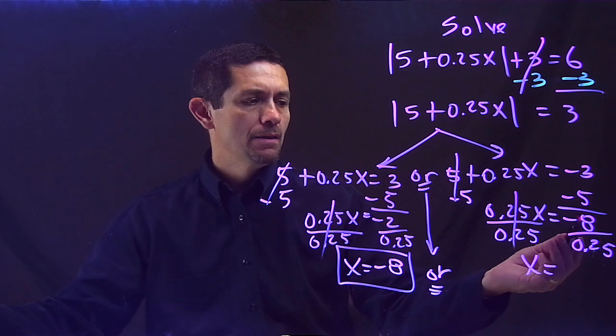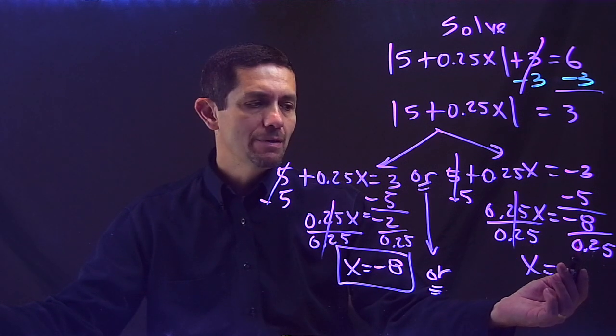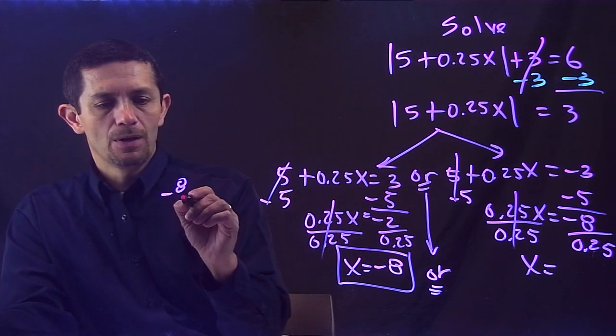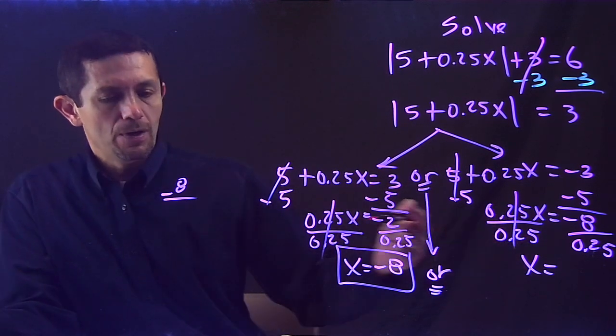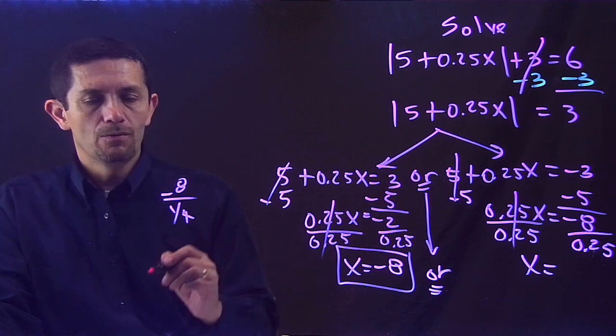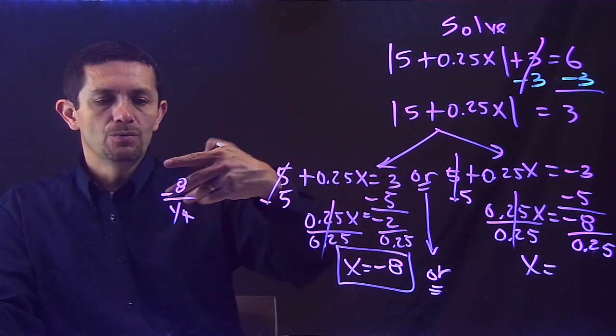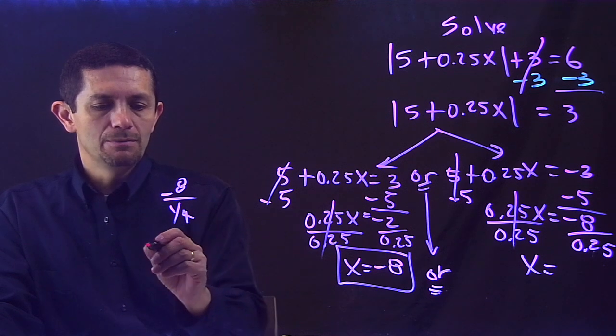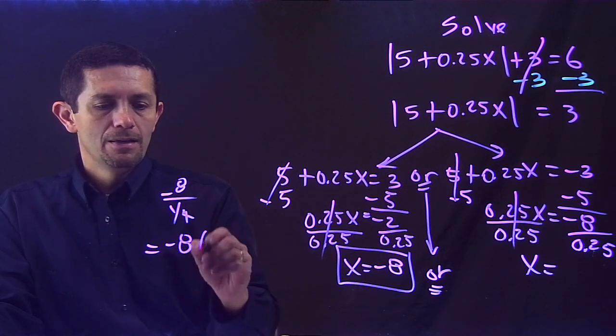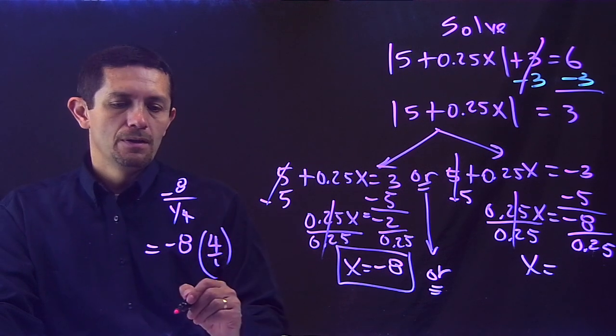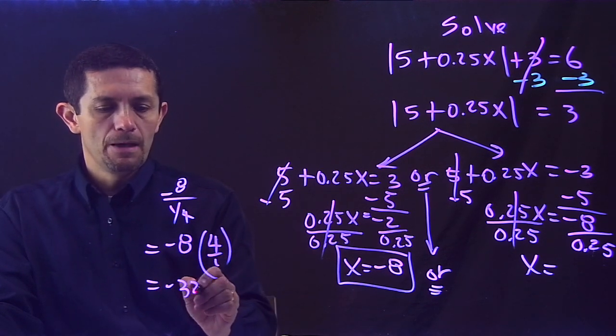Again, dividing by 0.25 is the same as dividing by 1 fourth. What I'm saying is that I have on that side, this is what I have. 0.25 is the same as divided by 1 fourth. To divide by a fraction, basically you do reciprocal, then it's the same thing as having negative 8 times the reciprocal of that, which is 4 over 1.